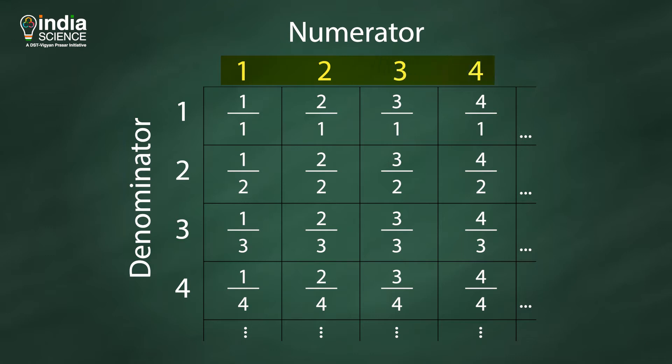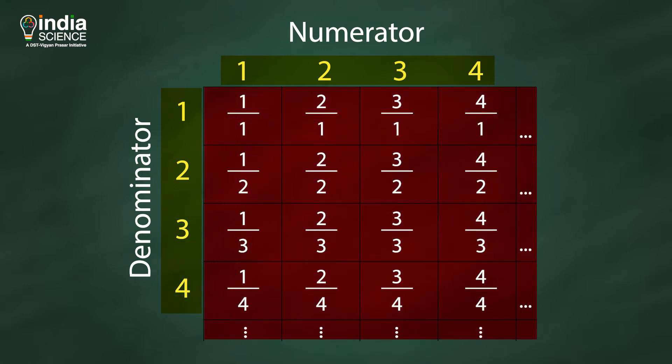On one side, we have numerators, which are the natural numbers. And on the other side, we have denominators, which are also natural numbers. And in the middle, we have rational numbers, which came from dividing two natural numbers. This is how we can have all the positive rational numbers.